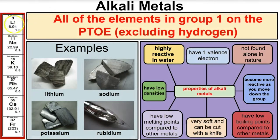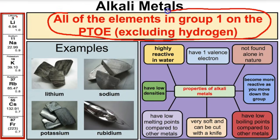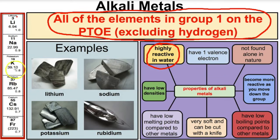Let's talk about the alkali metals. The alkali metals are all the metals in group one on the periodic table — excluding hydrogen, everything from lithium down to francium. These guys are highly reactive in water, and they become more reactive as you go down the group. For example, throwing a small chunk of lithium into water produces a fizz and maybe ignition, potassium produces a more violent reaction, and francium would be even more violent than potassium.